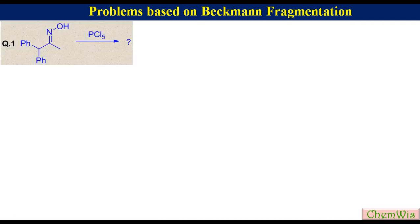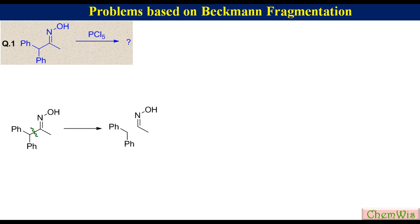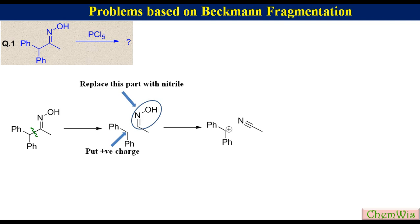Question 1: Write down the structure of products formed when 1,1-diphenylpropane-2-one-oxime reacts with PCl5. Since the group trans to the hydroxyl group is a diphenylmethyl group capable of stabilizing a cation, it will undergo Beckman Fragmentation. Using the short method: break the C-C bond trans to the hydroxyl group, put the positive charge on the diphenylmethyl fragment, and convert the other part into nitrile to get diphenylmethyl cation and acetonitrile.